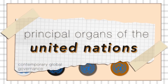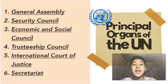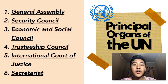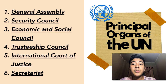The next part is the principal organs of the United Nations. Basically, there are six principal organs: first, the General Assembly; second, the Security Council; third, the Economic and Social Council; fourth, the Trusteeship Council; fifth, the International Court of Justice; and sixth, the Secretariat. My groupmates will elaborately discuss each of the principal organs of the United Nations.